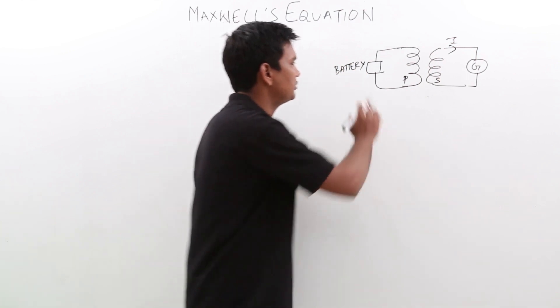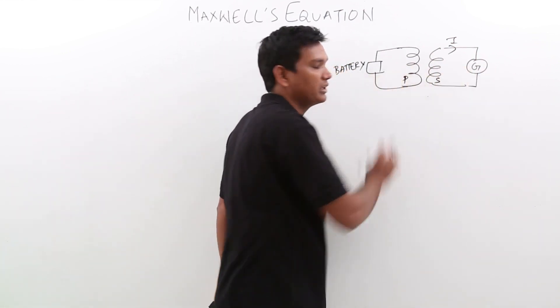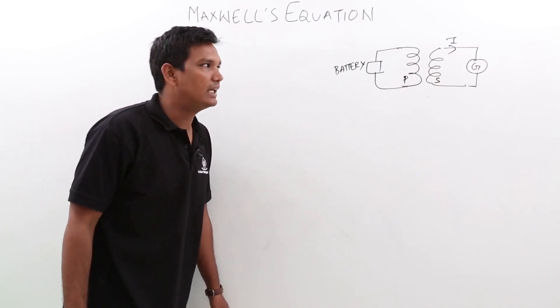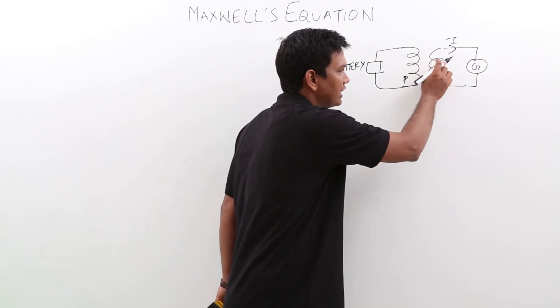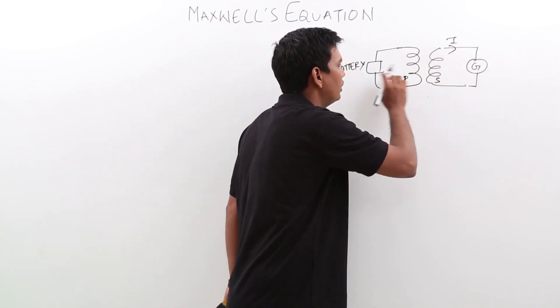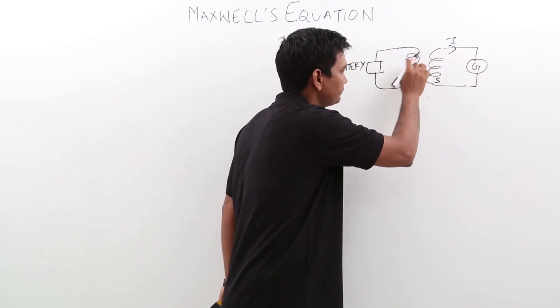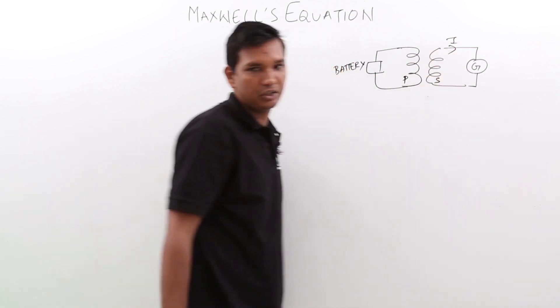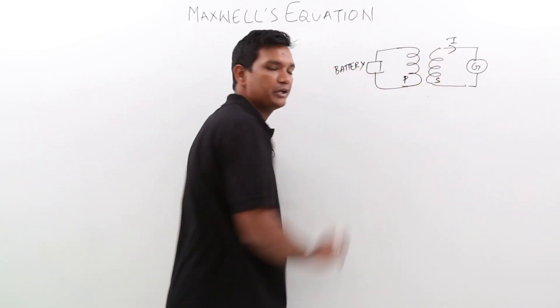When he switches the circuit, he has connected a battery here and galvanometer here, same response was noted. What he said is, there is an induced voltage in the secondary coil, when he is trying to or I can say that there is an induced current flowing in the secondary coil, when I am connecting a battery to the primary coil.